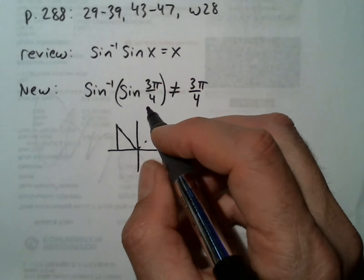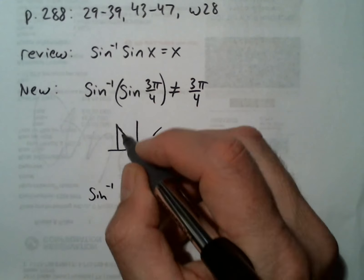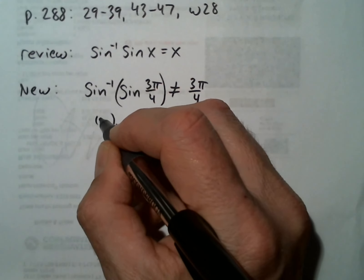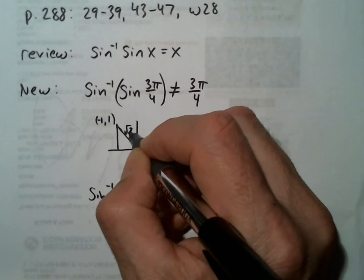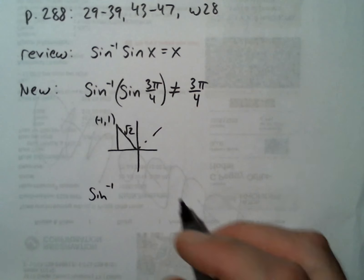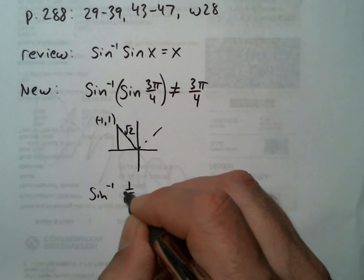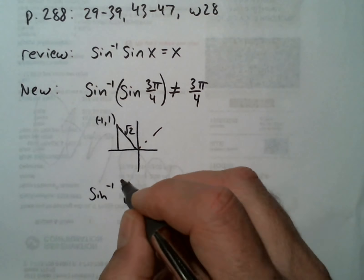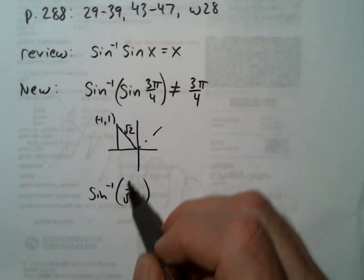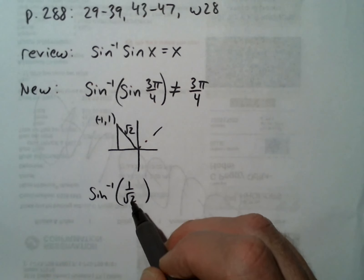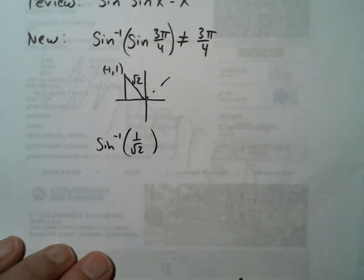The sine of 3π/4: here we have the coordinates (-1, 1) with radius √2. Since sine is y over r, that gives us 1 over √2. So then we have to do inverse sine of 1/√2, just like we did in a previous lesson.